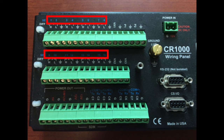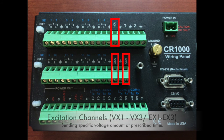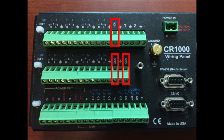Then you have excitation channels. These are sensors that need a pulse sent to them at a certain time to make recordings. We usually use this for either leaf wetness or wind direction. There are usually three of them, noted as VX1, EX1, VX2, VX3, EX2, and EX3.